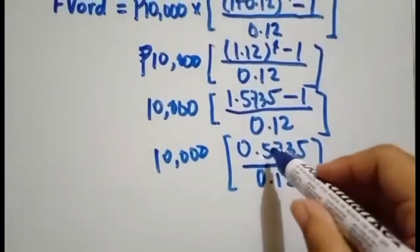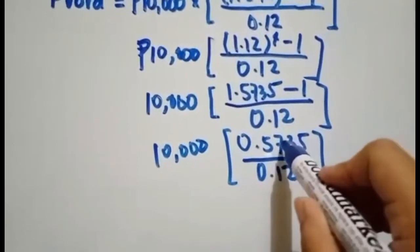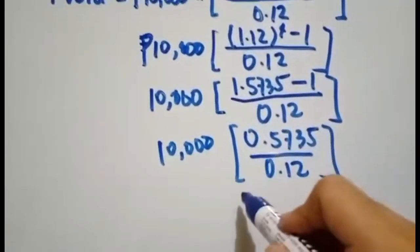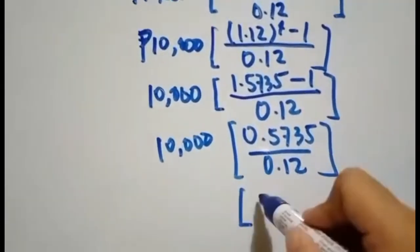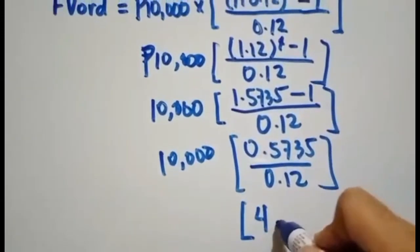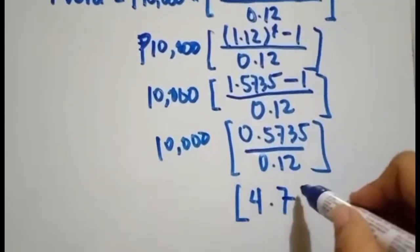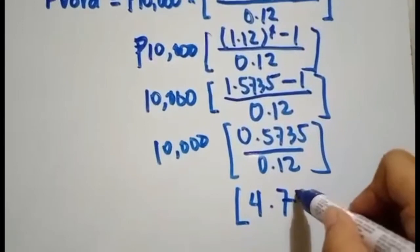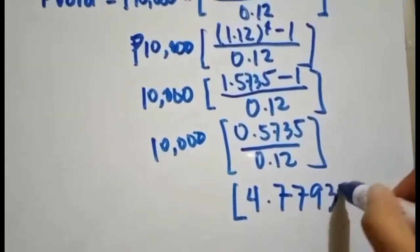Your next step is to divide this value by 0.12. Using your calculator, you will gain this value, which is 4.779328.